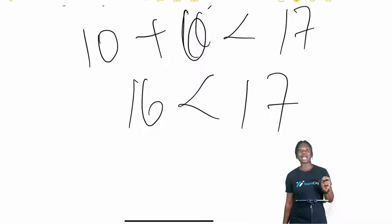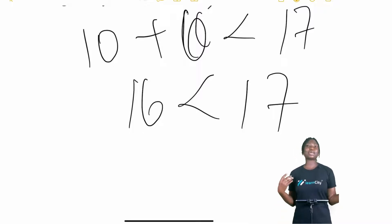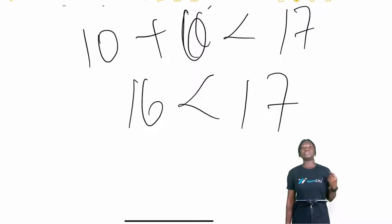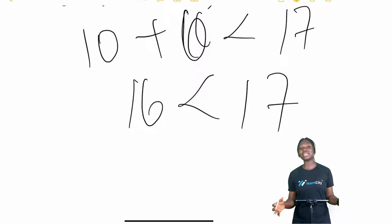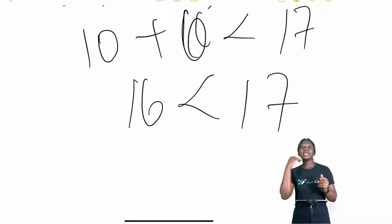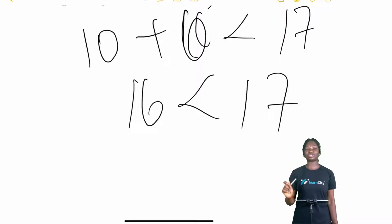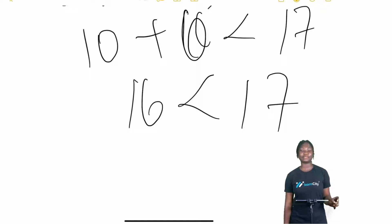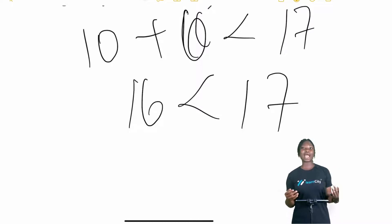So x equals 2 and y equals 3 satisfies 5x plus 2y less than 17. However, x equals 2 and y equals 3 is not our only solution. There are in fact infinitely many solutions to 5x plus 2y less than 17. If a pair of numbers x and y is a solution, think of this pair as a point in the plane. The set of all solutions can be thought of as a region in the xy-plane.